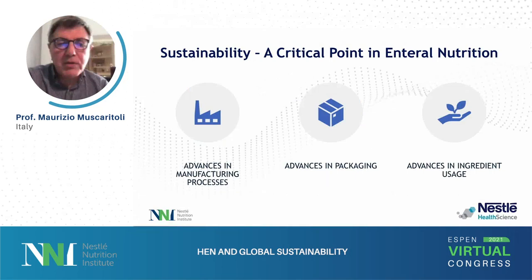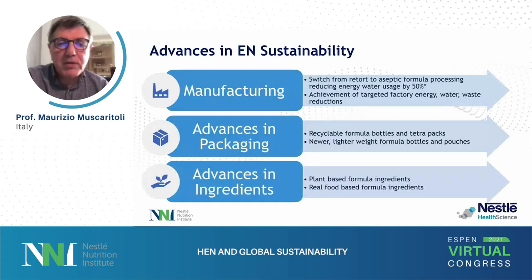Sustainability advances are being made in the areas of manufacturing processes, packaging, and ingredient usage. In manufacturing, some nutritional products are now made using aseptic formula processing — in one specific example this reduced energy and water usage by 50%. Some nutrition factories are committing to targeted reductions in energy, water, and waste. In packaging, some materials such as formula bottles and tetra cartons are now recyclable, and lighter-weight bottles and pouches reduce the amount of plastic used and the cost of transportation. The use of more sustainable ingredients such as plant-based proteins and real food-based formula ingredients — which have a much lower environmental burden than animal-based ingredients — is also very important.